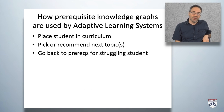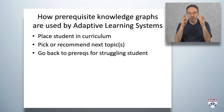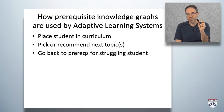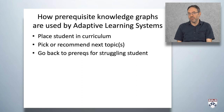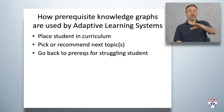How are prerequisite knowledge graphs used by adaptive learning systems? There are three main ways. First, to place the student in the curriculum — some systems like ALX give students a quiz at the beginning, then use a prerequisite knowledge graph to efficiently figure out where in the curriculum the student is, so you don't waste their time with stuff they already know or have them work on stuff they're not ready to learn. Second, they're used to pick or recommend the next topic for the student to work on. Third, when a student is struggling, one possible explanation is they didn't solidly get the prerequisite, so some systems will send the student back to the prerequisite.